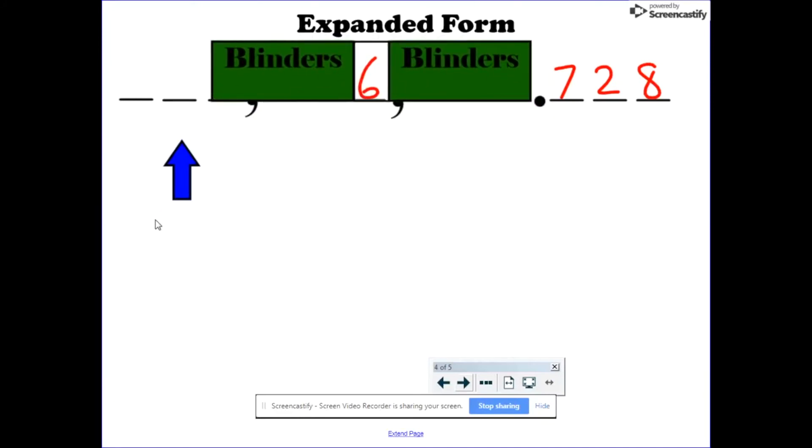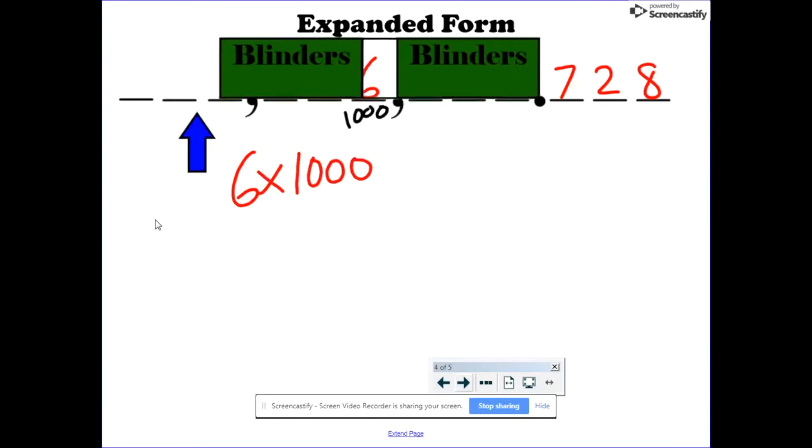So that's six. And guess what? You just write six. But six what? It's six in the thousands place. Let me write a little thousand here. Six in the thousands place. And that's the beginning of our expanded form.